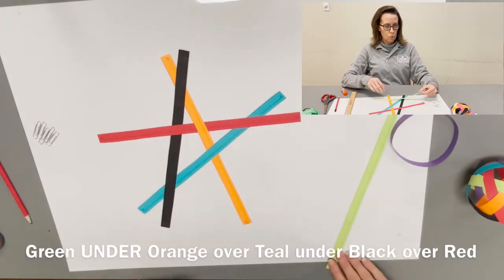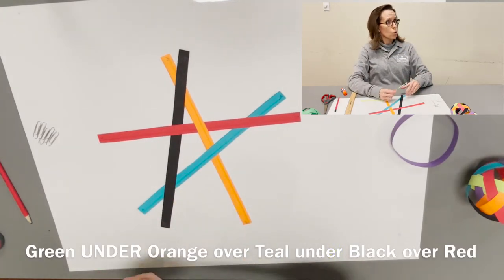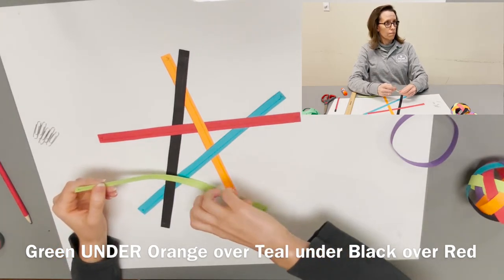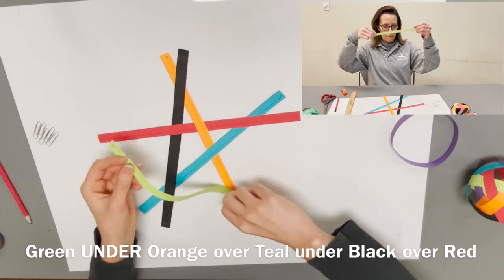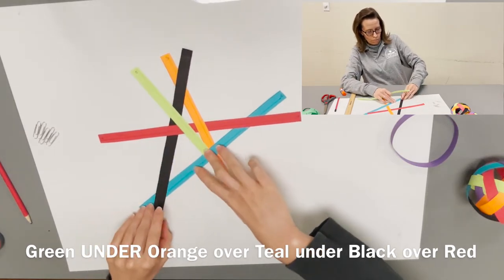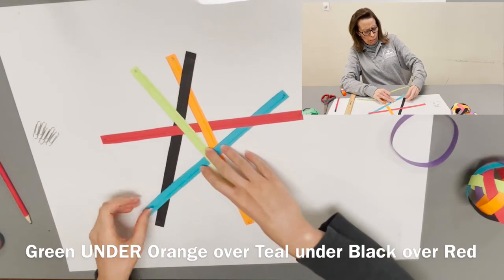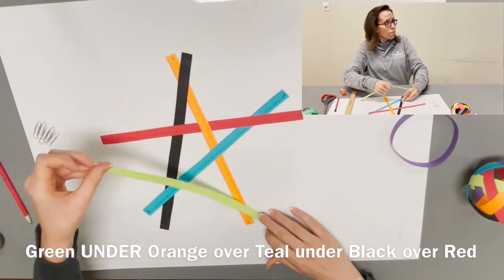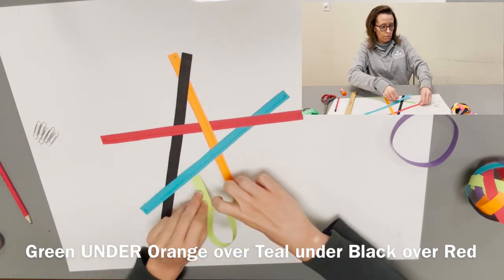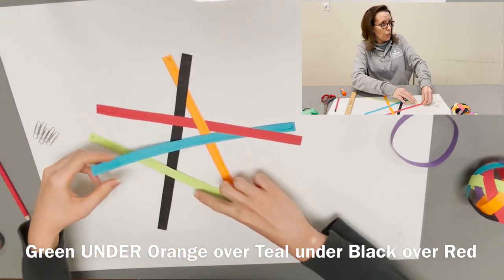Your final strip is your green one which is going to go over the orange. Actually, I got your teal in the wrong spot, it goes over the black. So your green goes over the orange, under the teal, over the black, and over the red.